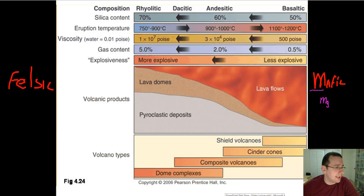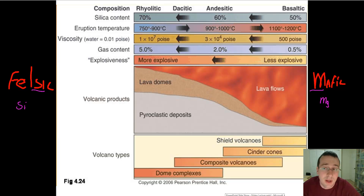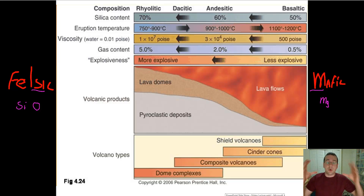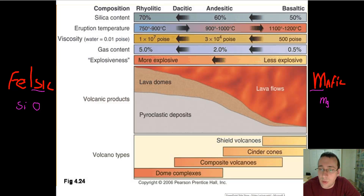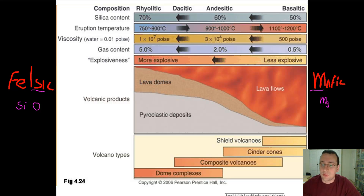Felsic lava — I see 'SI' right here in the middle of the word, and I remember silicon. Felsic lava is going to be rich in silicon oxide, which is most common in the Earth's crust. The Earth's crust is mostly continental crust. Continental crust includes the majority of the mass of the Earth's crust because it's so much more massive and thicker, and it's rich in silicon and oxygen. So felsic lava is richer in silicon and oxygen because it comes mostly from continents, while mafic lava is associated with oceans.